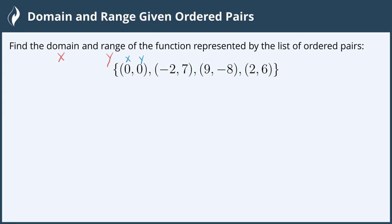If we list out all of the x values we can see they are the first one in each of the ordered pairs and the y value is the second value in each of these ordered pairs.